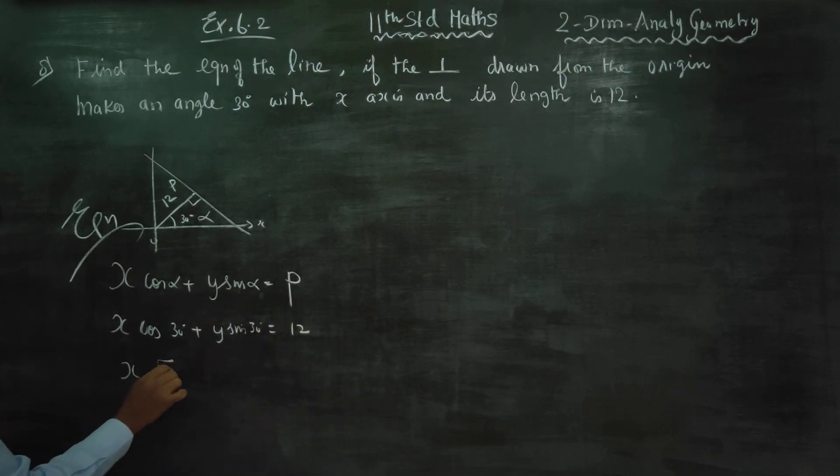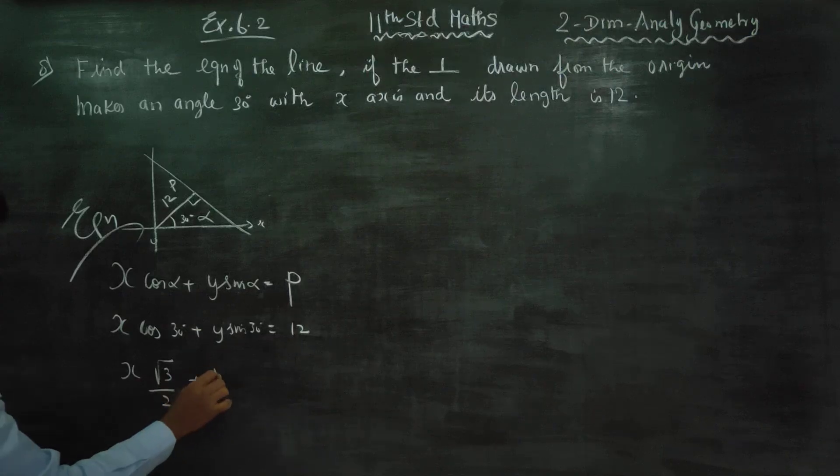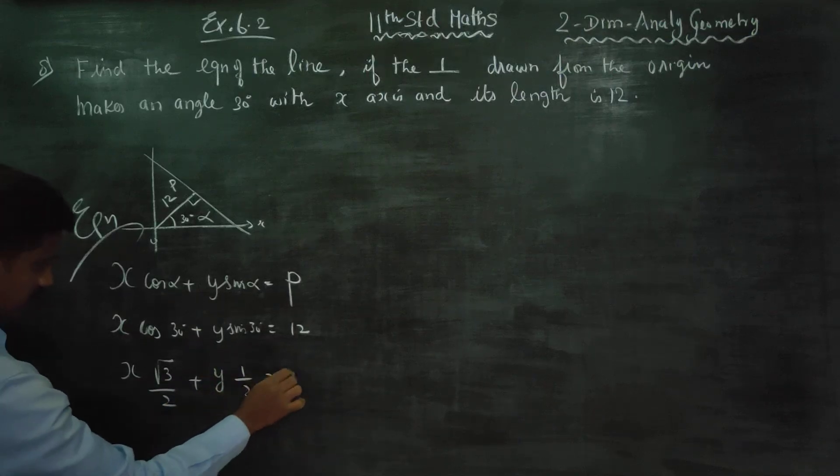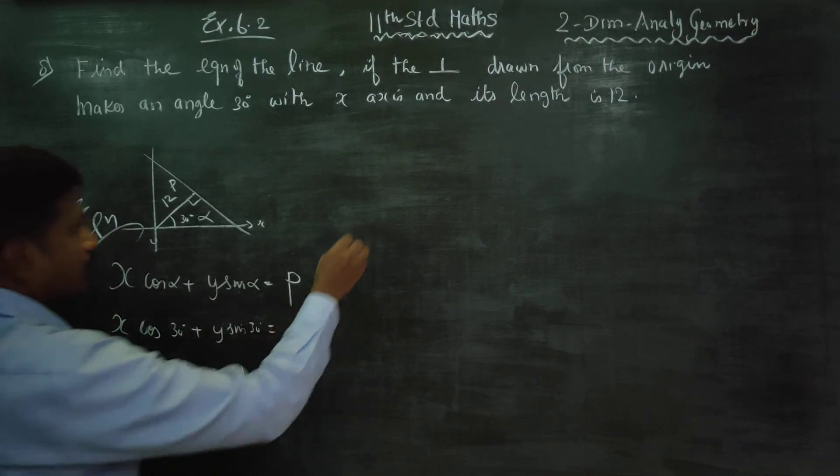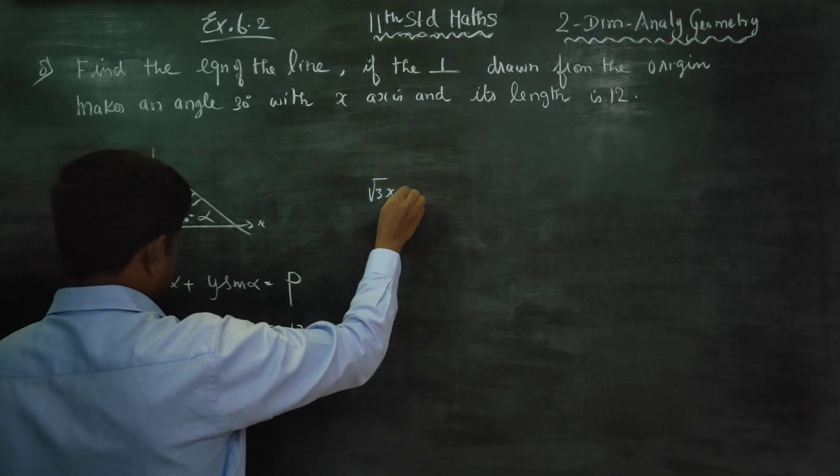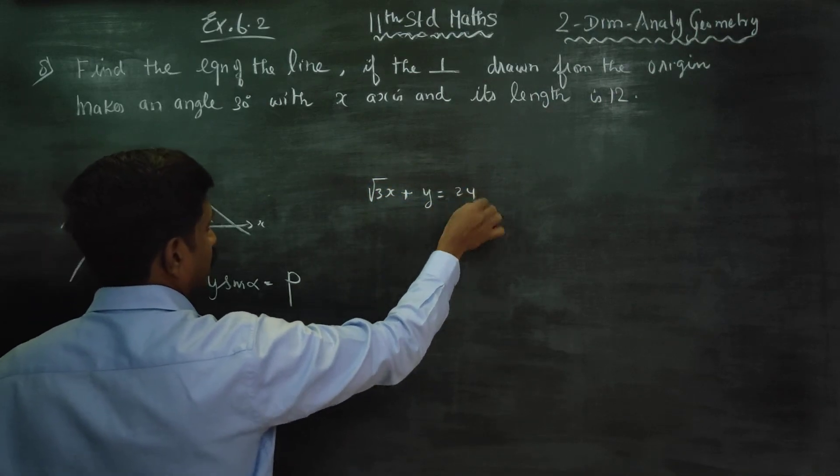Cos 30 is root 3 by 2. Sin 30 is 1 by 2 is equal to 12. Just multiply by 2, you will be getting root 3x plus y is equal to 24.